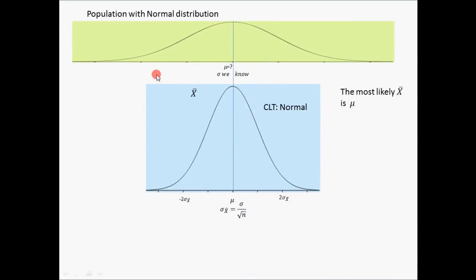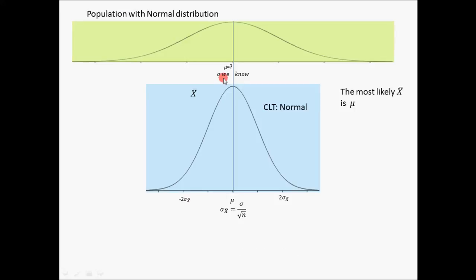Let's assume that we have a population with a normal distribution. The mean of the population is unknown to us, but sigma is known. If we start to take all possible samples of size n from that population, the Central Limit Theorem tells us that the distribution of X-bars would be a normal distribution where the expected value of X-bars is the mean of the population, and the standard deviation of the distribution of X-bar would be the standard deviation of the population divided by the square root of n.